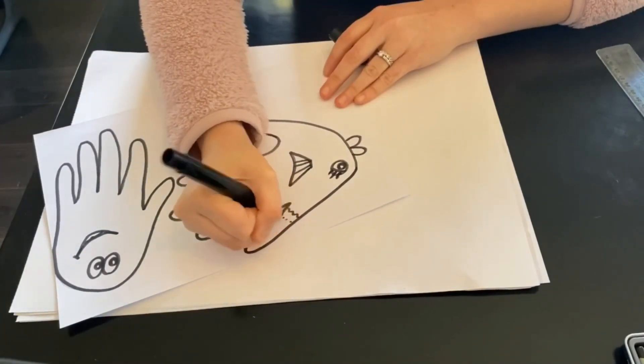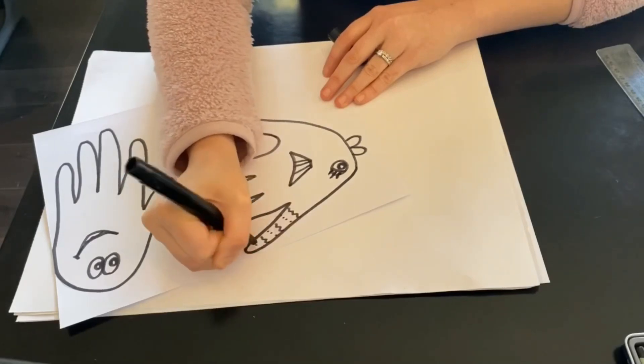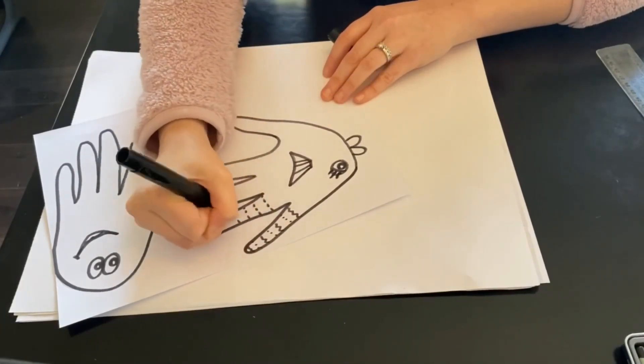Now I'm going to draw some lines and shapes and patterns on all of the fingers so that my fish has a fancy tail.